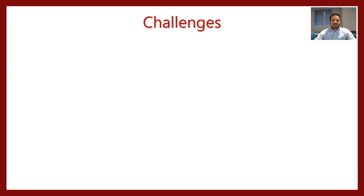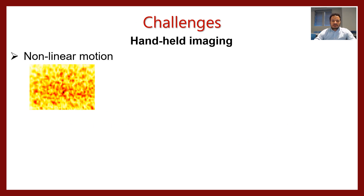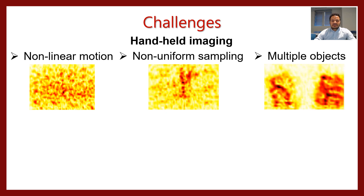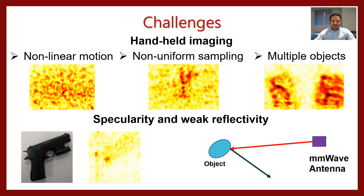We need to solve a few challenges before we achieve that. The first one is handheld imaging, where we have non-linear motions, non-uniform sampling, and multiple objects in the scene. The second challenge is specularity of the Millimeter Wave and the weak reflectivity of the object, where the transmitted signal strikes the object at a certain angle and does not reflect back to the antenna, so we will be missing lots of surfaces from the object in the Millimeter Wave.